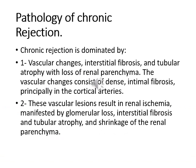Pathology of chronic rejection. Chronic rejection is dominated by vascular changes — mainly chronic vascular changes — interstitial fibrosis, and tubular atrophy due to ischemia, with loss of renal parenchyma. The vascular changes consist of dense intimal fibrosis, principally in the cortical arteries. These vascular lesions result in renal ischemia and eventually lead to glomerular loss, interstitial fibrosis, tubular atrophy, and overall shrinkage of the renal parenchyma.